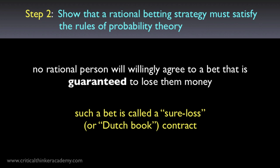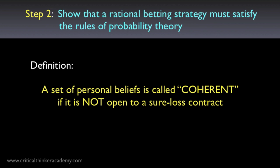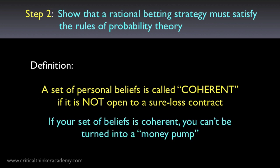These sure-loss contracts are also known as Dutch book contracts, and this kind of argument is called a Dutch book argument. Ramsey was the one who introduced this language — the term Dutch book is now standard in probability theory and economics, though I'll follow Ian Hacking and just call it a sure-loss contract. We can now define an important concept: if a set of personal degrees of belief is not open to a sure-loss contract, then the set of beliefs is called coherent. If your set of beliefs is coherent, then by definition you can't be turned into a money pump for an unscrupulous bookie. Note that this is a technical sense of coherence specific to this context — it's intended as an extension of the logical concept of consistency applied to partial degrees of belief.